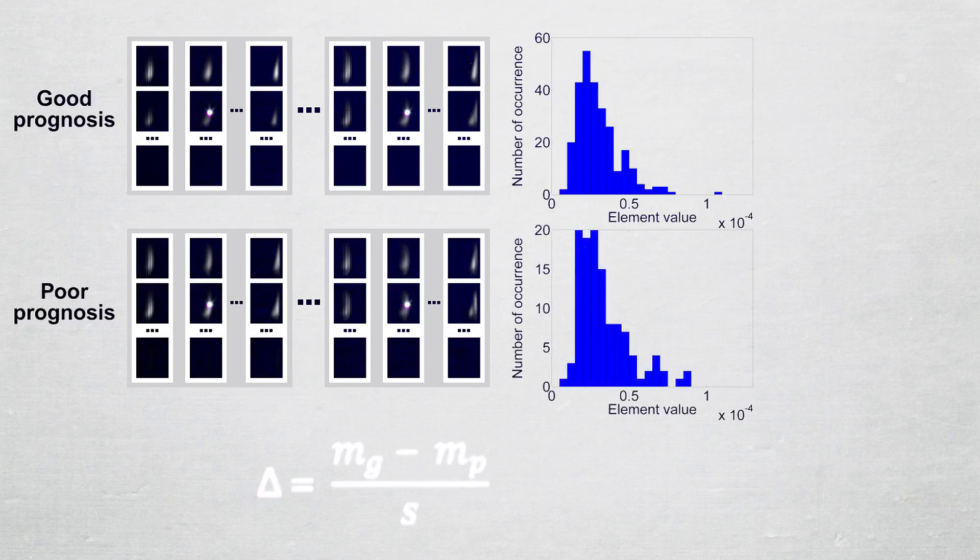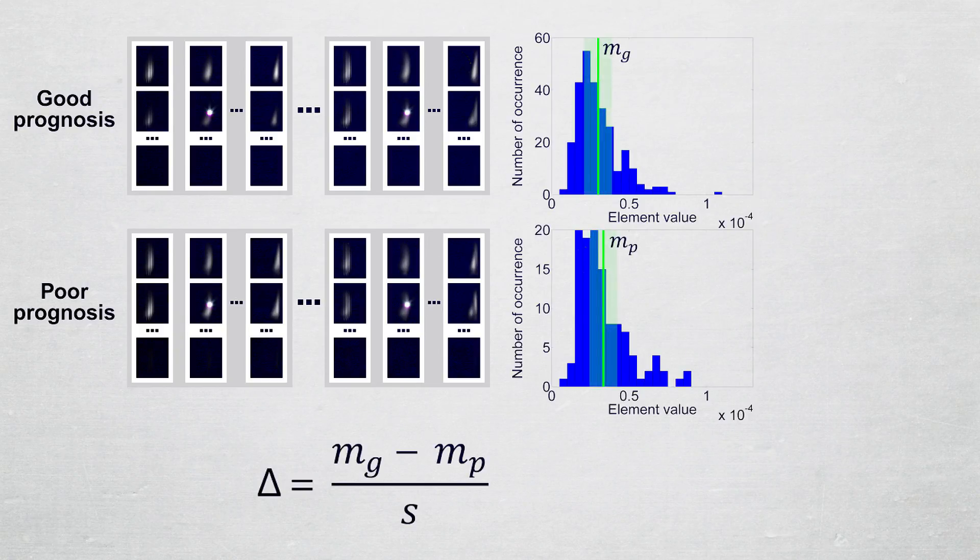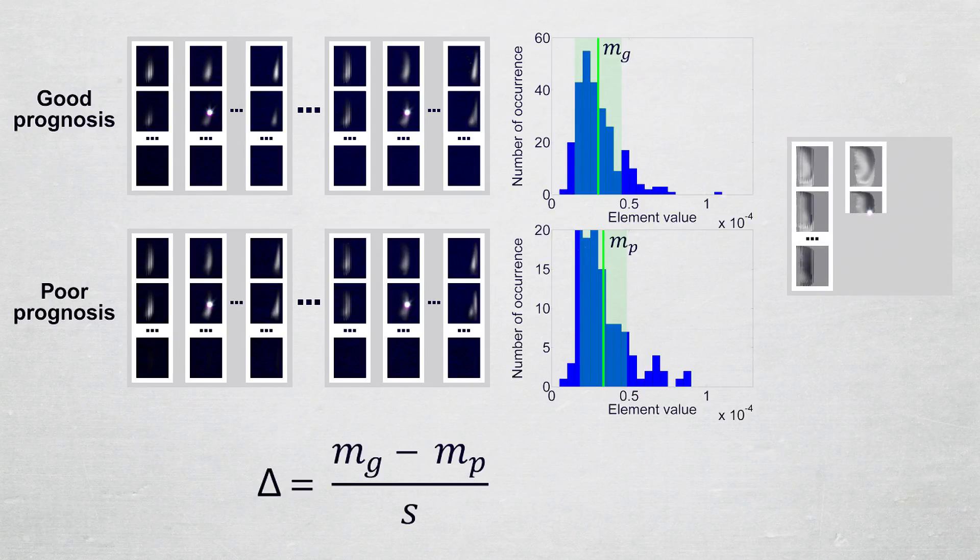We then compute the statistical discrepancy between the prognosis groups as the difference in means divided by the standard deviation. This estimate is then stored in the corresponding element of a matrix which has a size identical to the GLEM4D.